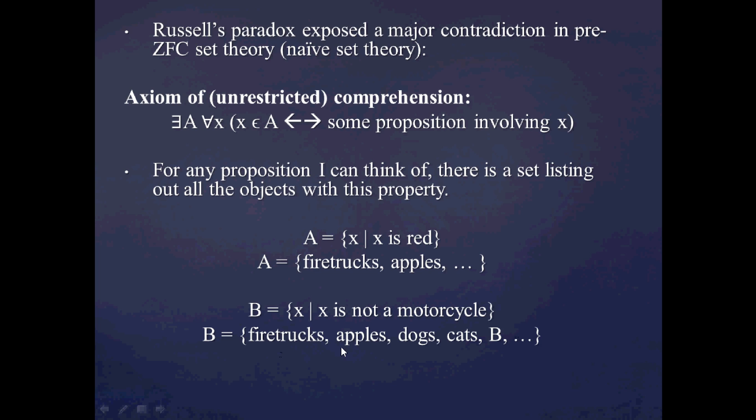And again, the set B would contain objects like fire trucks, apples, dogs, cats. More interestingly, it would also contain B as a member of itself because the set B is not a motorcycle. So B gets to live within the set B.